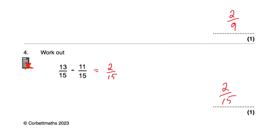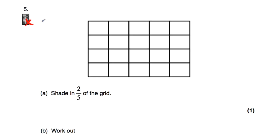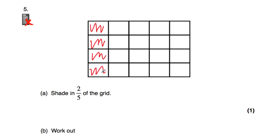Let's have a look at question number five. Question number five is an on-calculator question, and we've been asked to shade in two fifths of this grid. You can do this in a couple of different ways. The first thing I notice is there are five columns. We've been asked to shade in two fifths of the grid, so we just need to shade in two of the columns — the first column and the next column. That gives us two fifths of the grid, because we've shaded in two out of the five columns.